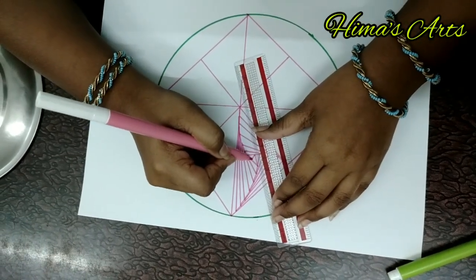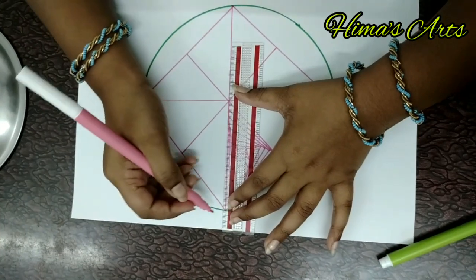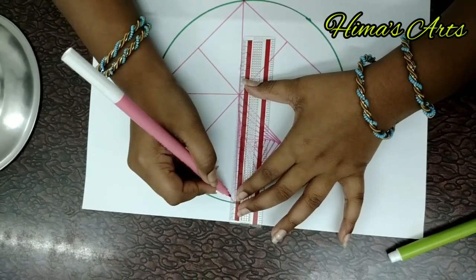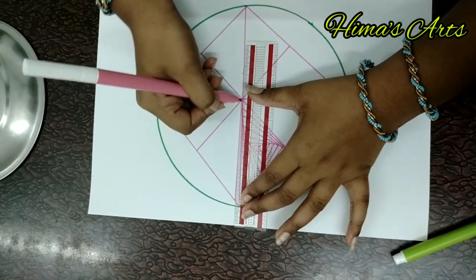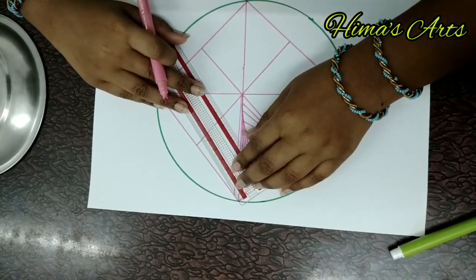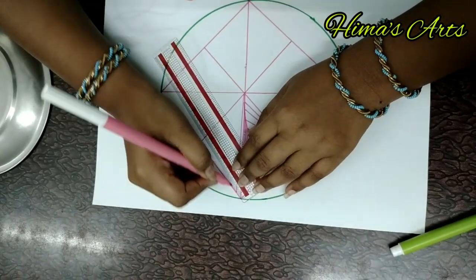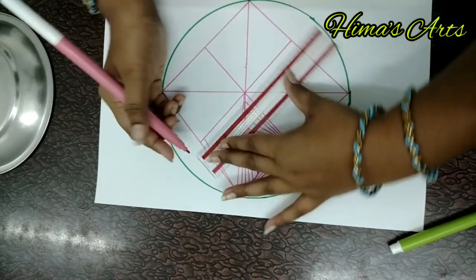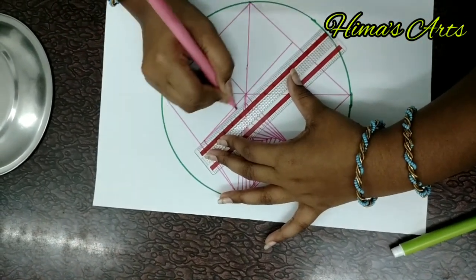It became a very beautiful pattern. Like this, you should draw lines in the second triangle. Same pattern. It is very easy, just like that triangle.